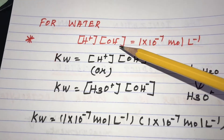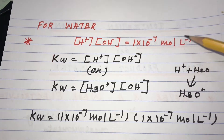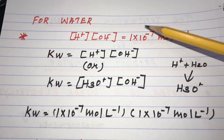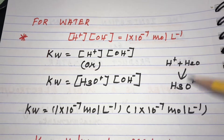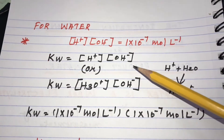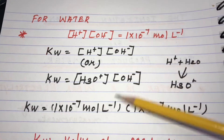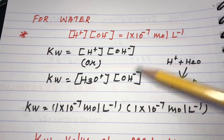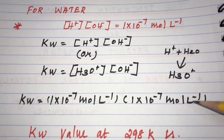For water, the H⁺ ion and OH⁻ ion concentrations are each equal to 1 × 10⁻⁷ mol L⁻¹, since water is a neutral solvent. Substituting these values: Kw = [H⁺][OH⁻] = (1 × 10⁻⁷ mol L⁻¹) × (1 × 10⁻⁷ mol L⁻¹).